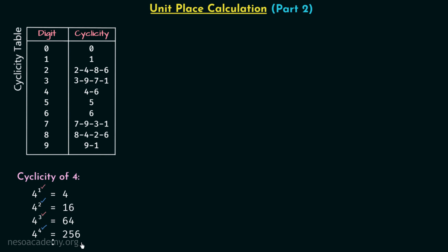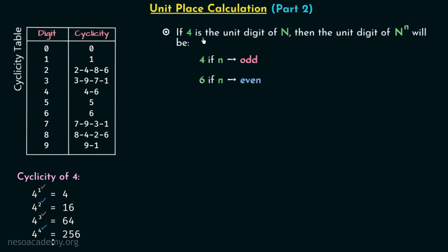So from this understanding we can say that if four is the unit digit of number n, then the unit digit of n raised to power n will be four if n is odd, and the unit digit will be six if n is even.